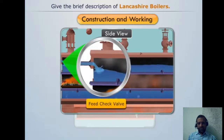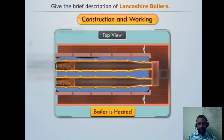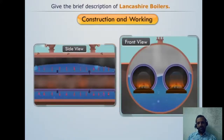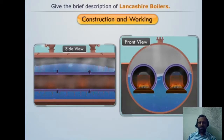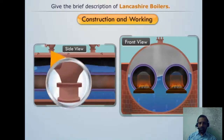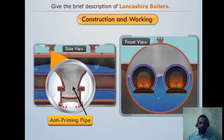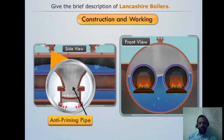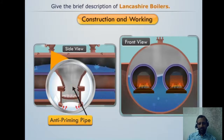When you open the feed check valve, water flows in and fills the boiler. The water gets heated and steam is formed. Because of the flue gases, the water gets converted into steam. At the top, an anti-priming pipe is provided — since steam contains water particles, the anti-priming pipe separates those water particles and supplies only dry steam to the engine.